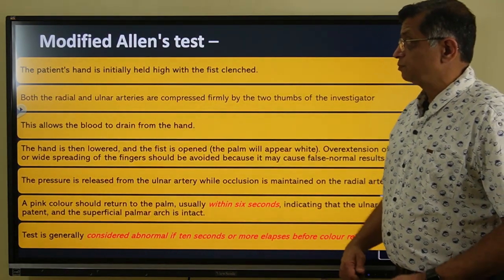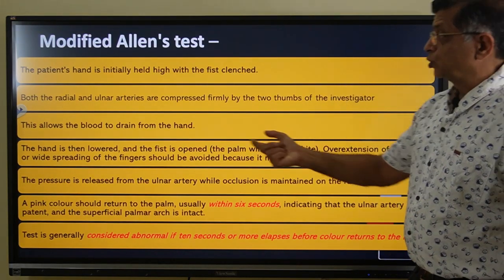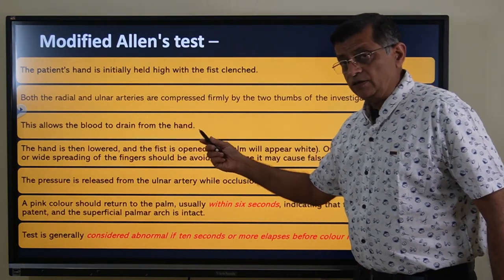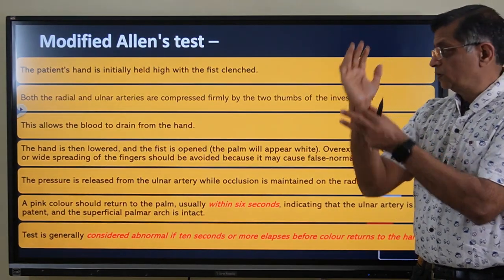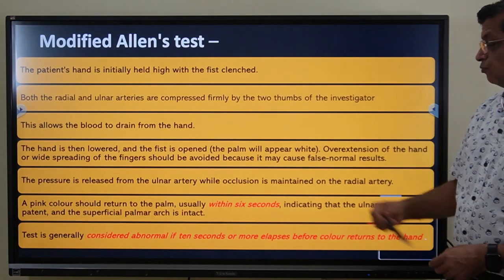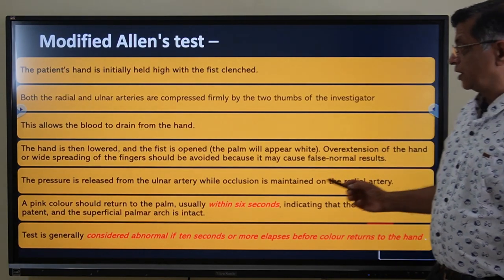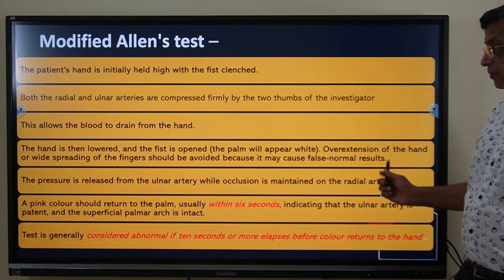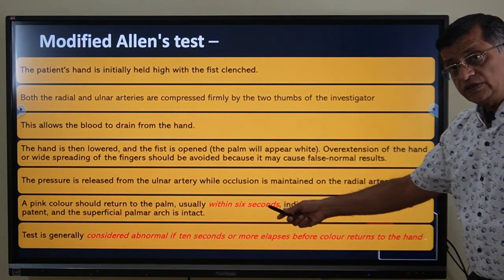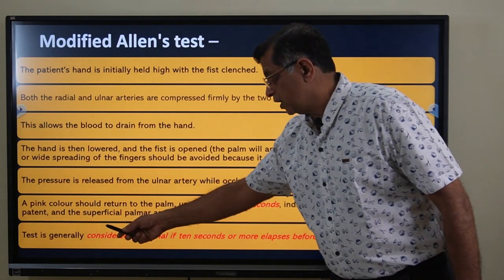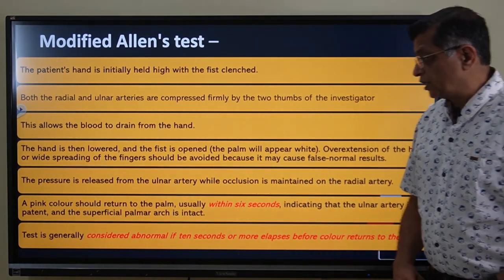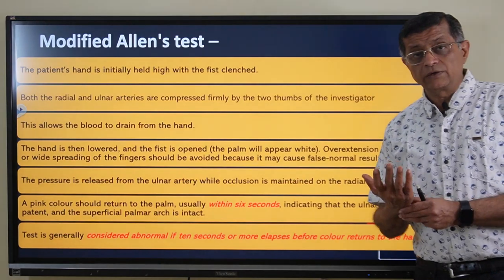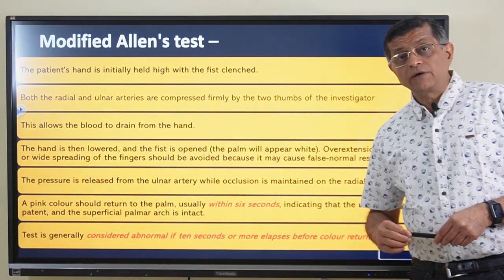The patient initially holds the hand high with the fist clenched; both radial and ulnar arteries are compressed firmly to drain blood from the hand. The hand is then lowered and the fist opened — the palm will appear white. Avoid over-extension or wide spreading of fingers. Pressure is released from the ulnar artery while occlusion is maintained at the radial artery. Pink color should return within six seconds, indicating the ulnar artery is patent. If ten or more seconds elapse before color returns, the test is abnormal and radial sampling is contraindicated.